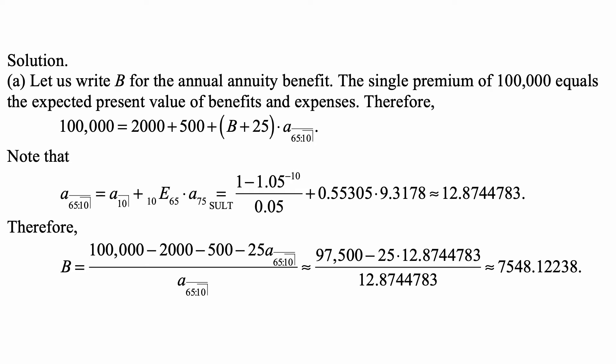That annuity factor equals a̅⌉̅10 + 10E65 × a75. Based on the standard ultimate life table, this equals (1 - 1.05^-10)/0.05, that's a̅⌉̅10, plus 10E65 from the table which is 0.55305.